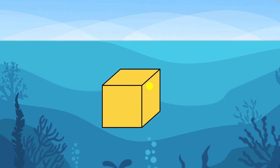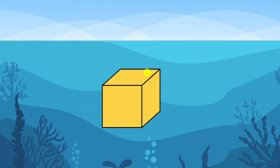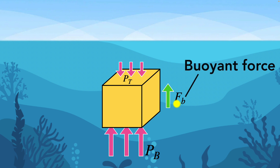Let's consider the horizontal forces — for example, the forces on the left and right side of the cube. The pressure is increasing with depth, but notice the forces pretty much cancel out. The same thing happens with the front and back surface of the cube as well, so all the horizontal forces cancel out. But what about the top and bottom surface? The pressure on the top is smaller than the pressure from the bottom. Because the surface area is exactly the same on both the top and the bottom, the forces from the bottom will be larger than the force from the top. Therefore, the forces don't cancel out — instead, there is a net force acting upwards.